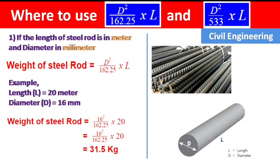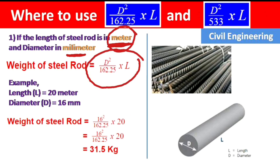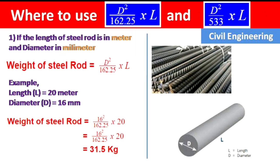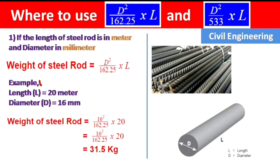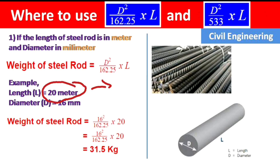Formula one — d² / 162.25 × L — is used when the length of the steel rod is in meters and the diameter is in millimeters. As you can see in this picture, the length is measured from end to end, and this is the diameter. For example, the length is 20 meters and the diameter is 16 mm.